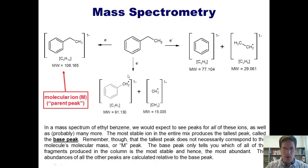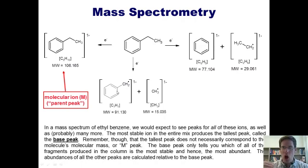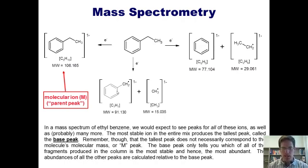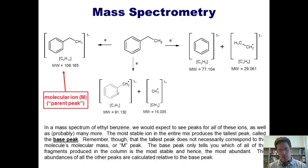In a mass spectrum of ethylbenzene, we would expect to see peaks for all of these ions, as well as probably many more. The most stable fragment — expected to be the benzyl radical — would give the tallest peak, called the base peak. Remember that the tallest peak does not necessarily correspond to the molecule's molecular mass or M peak, also called the parent peak. The base peak only tells you which fragment is most stable and hence most abundant. The abundances of all other peaks are calculated relative to the base peak.